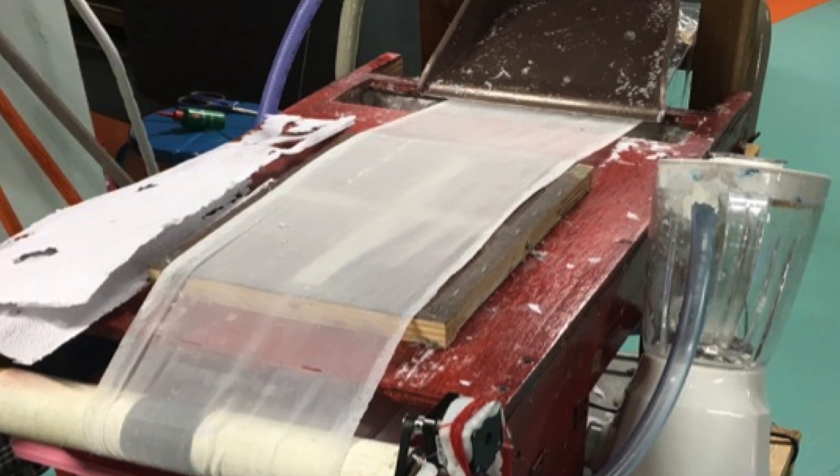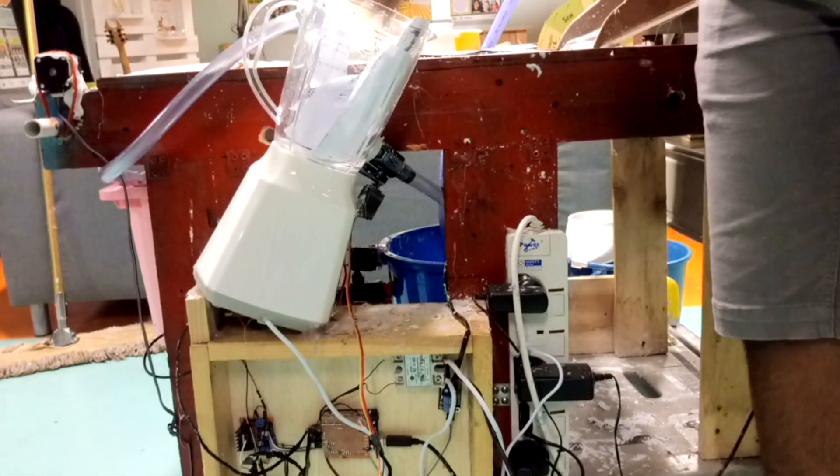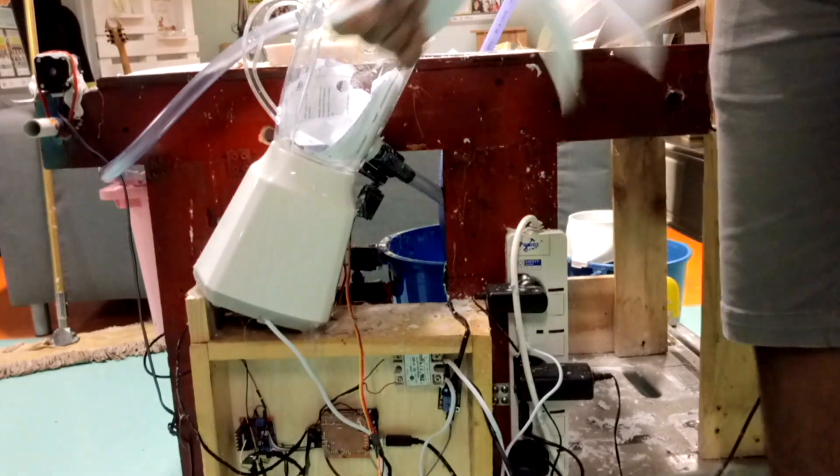The first thing you will do is find old paper, the paper you want to recycle, and put it inside the blender.